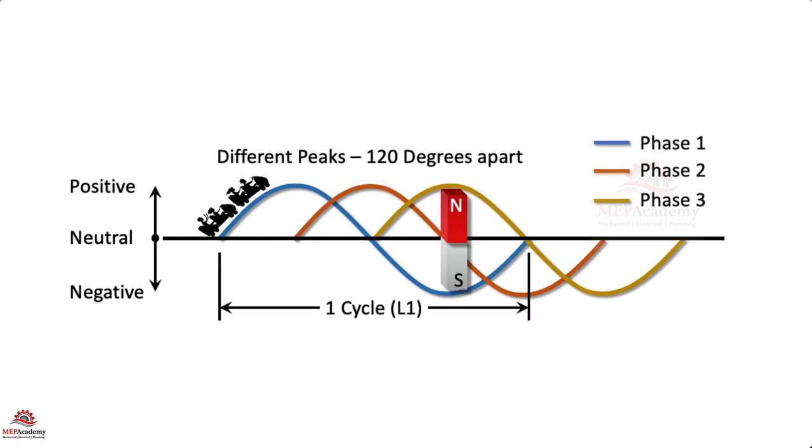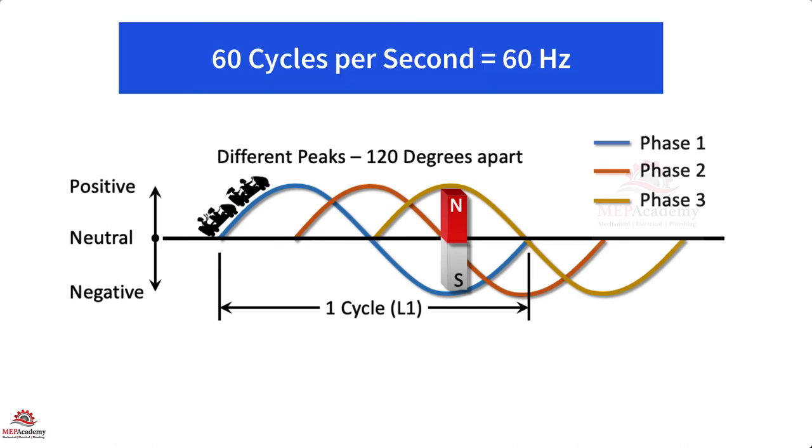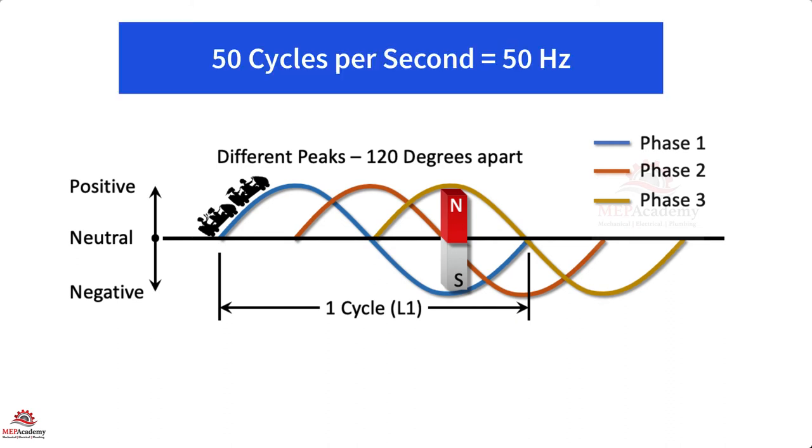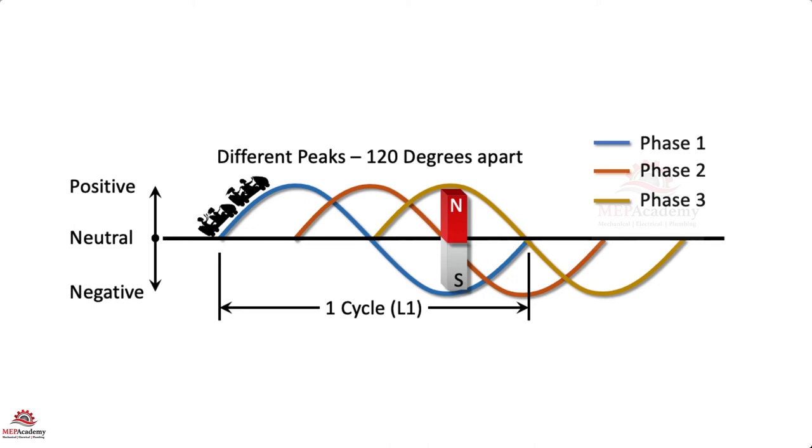This occurs 60 times in a second, giving us 60 Hz. Or if you're in a country that uses 50 Hz, this will occur 50 times a second. A complete rotation of all three phases equals one cycle. And in a 60 Hz system, that would mean 60 cycles or rotations of the rotor within the stator housing every second. For a 50 Hz system, 50 cycles per second.